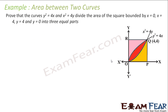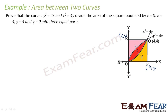Let us take the last example. We have to prove that the curves y² = 4x and x² = 4y divide the square bounded by x=0, x=4, y=4, and y=0 into three equal parts. I have this square with vertices at (0,0), (4,0), (4,4), and (0,4). We label the three regions as A1, A2, and A3, and we have to prove that A1 = A2 = A3.